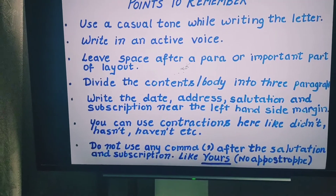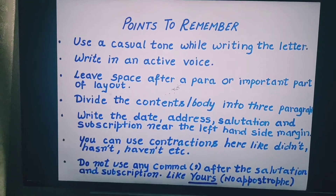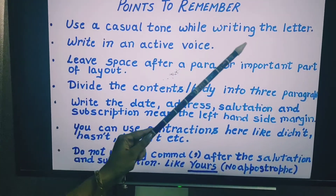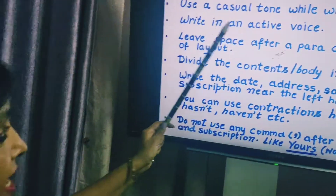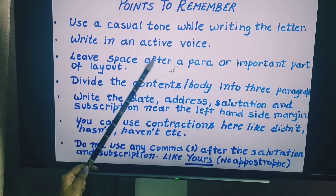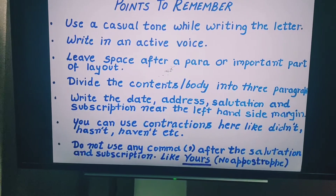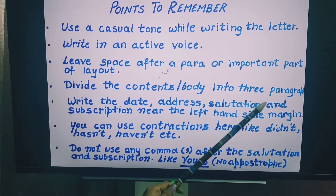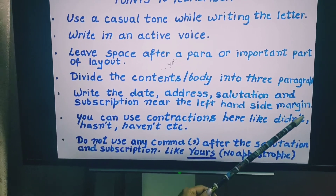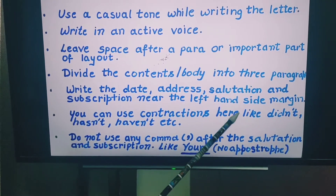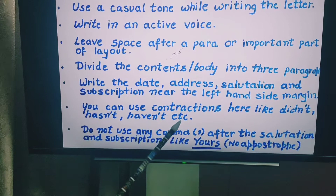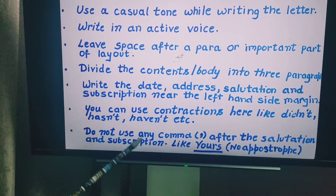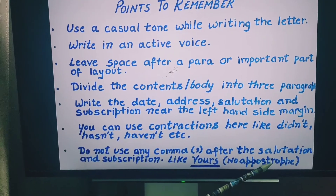In an informal letter, there are some important points to note. You should use a casual tone while writing the letter and write in an active voice. Leave space after each paragraph or important part of the layout. Divide the body into three paragraphs. Write the date, address, salutation and subscription on the left-hand side. You can use contractions like didn't, hasn't, haven't etc. Do not use any comma or apostrophe after the salutation and subscription — for example, 'yours' should have no apostrophe.